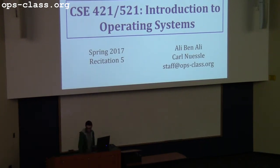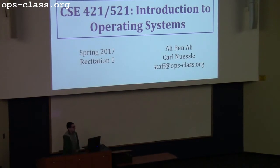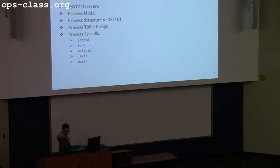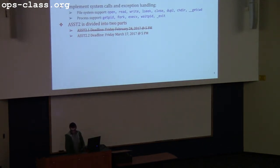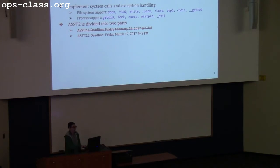This is hopefully the last presentation for assignment 2. Next week we're going to start giving an introduction to assignment 3. Today we're going to overview assignment 2 and cover a process model, process structure, and process tools in general, including getpid, fork, waitpid, and execv. By now you should have your file system implemented and already started with the process system. If you finished your file system by last Friday, you're on track. You need around two weeks for the process system, and the deadline is March 17th.